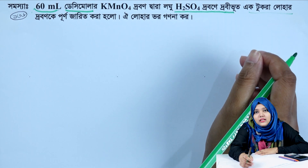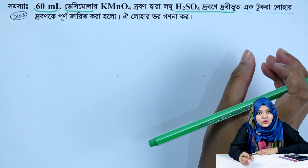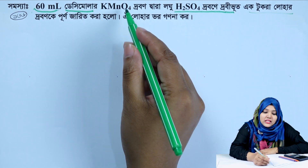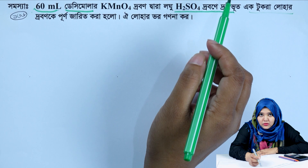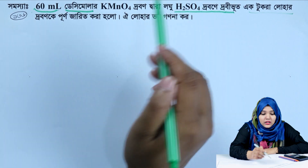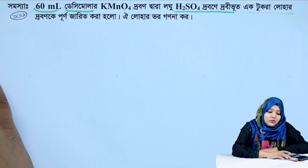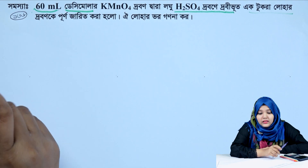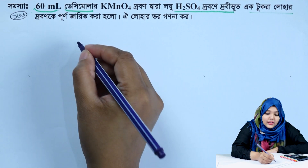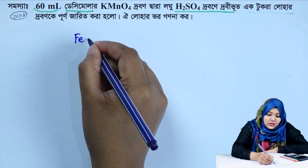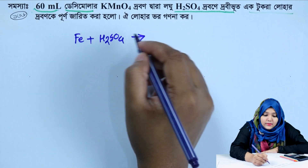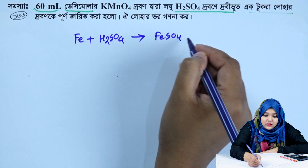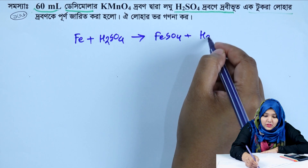The iron was dissolved in the dilute sulfuric acid solution and a reaction took place. The products of the reaction were ferrosulfate remaining in the solution, and hydrogen gas was also produced. Iron reacts with dilute sulfuric acid to produce ferrosulfate and hydrogen gas.